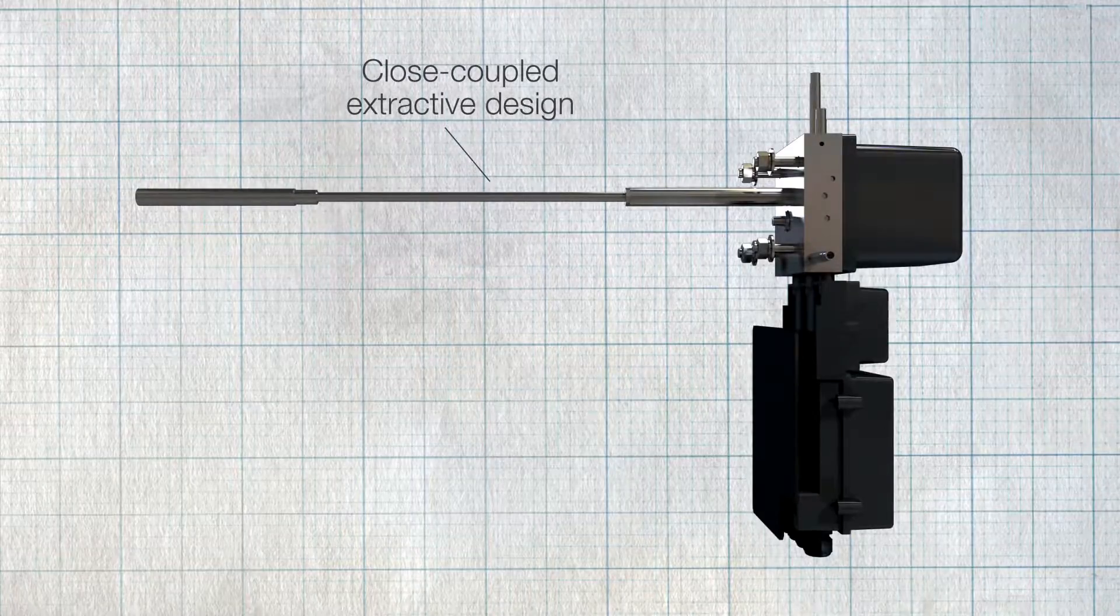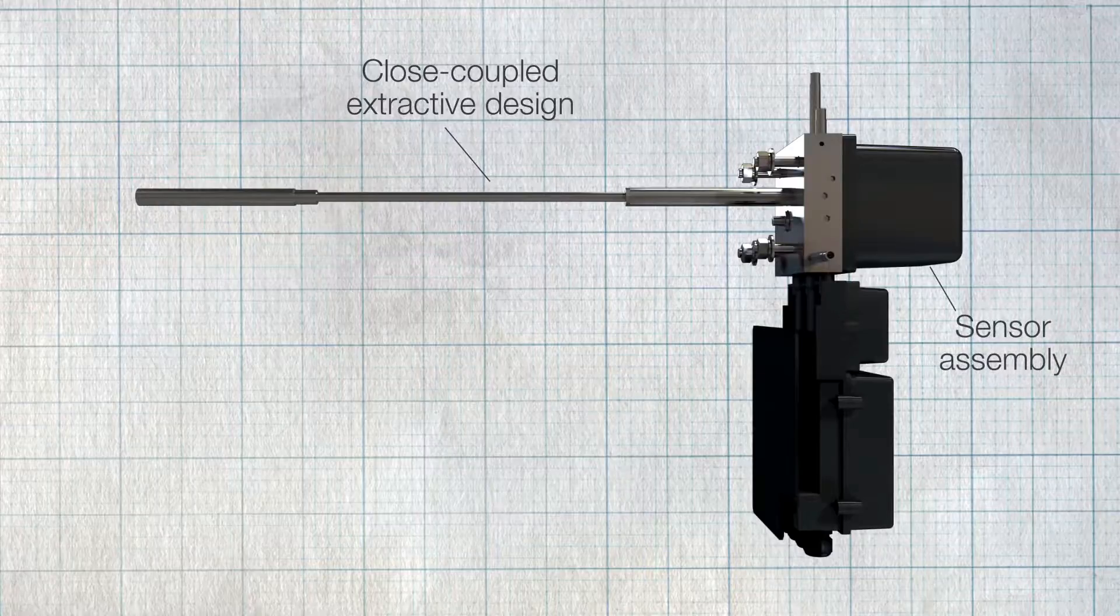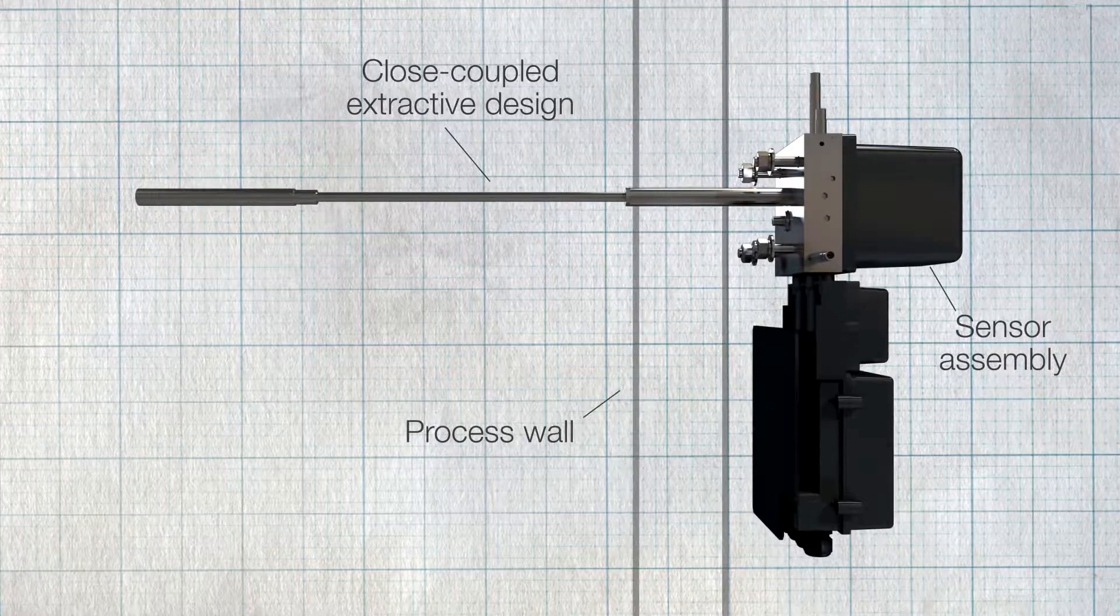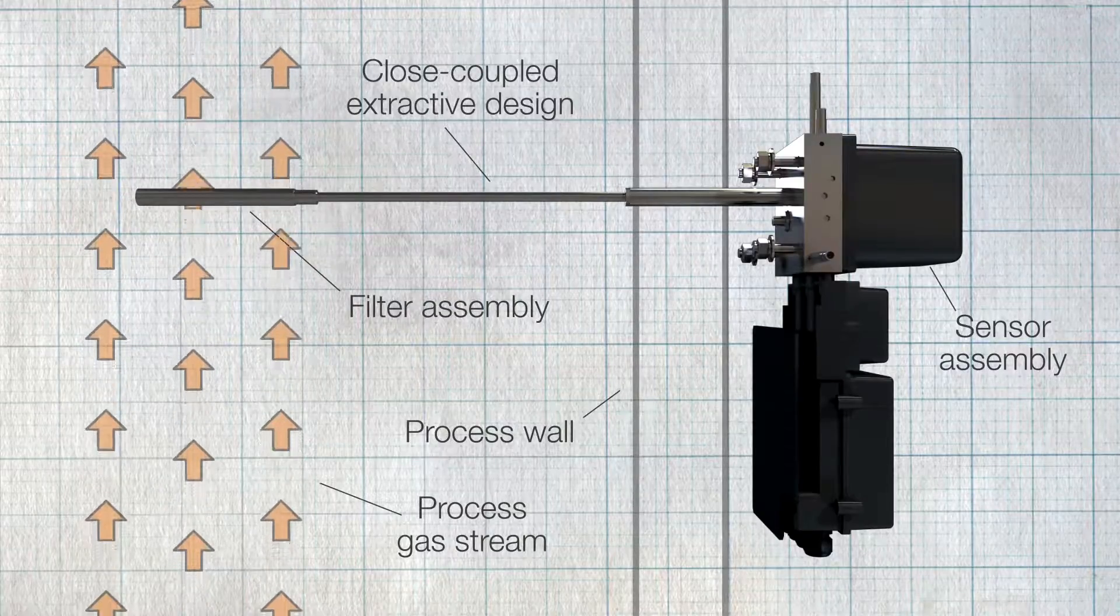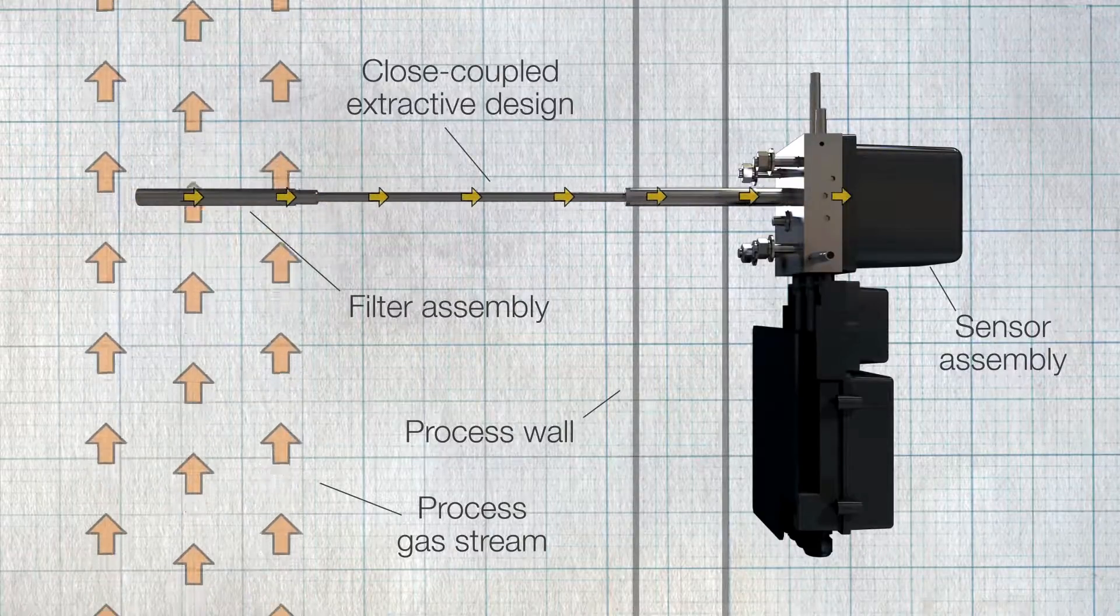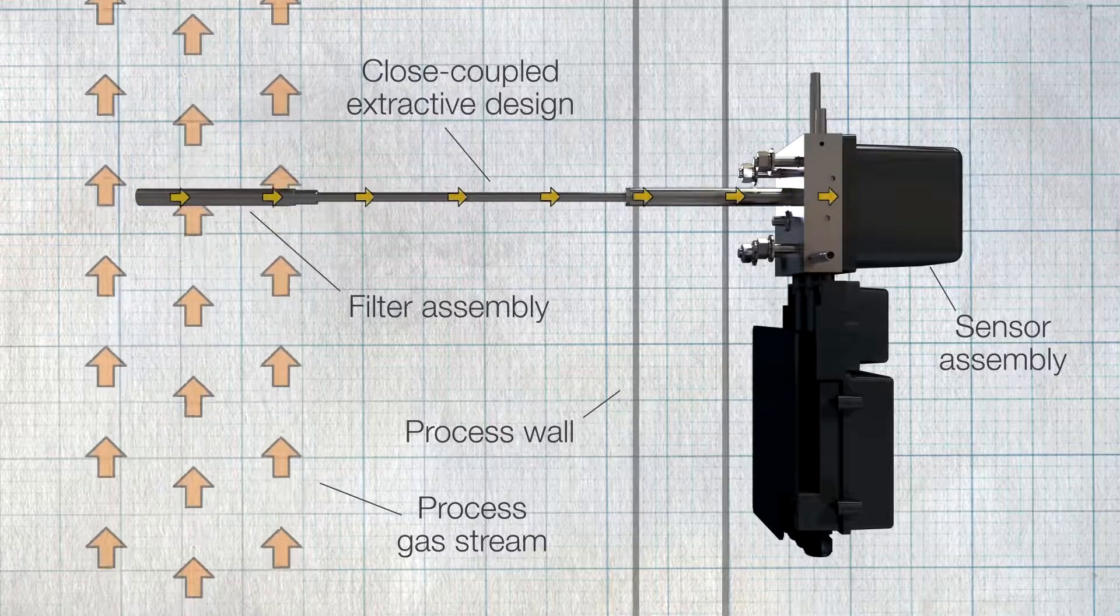Featuring a close-coupled extractive design, the AZ-40 uses a sensor assembly mounted on the process wall, with the probe and filter assembly extending into the process gas stream. The sample is extracted from the process and fed through the sensor head using an air-powered ejector.